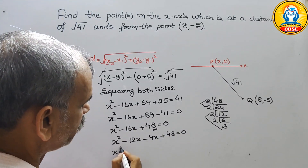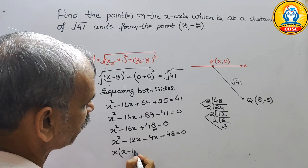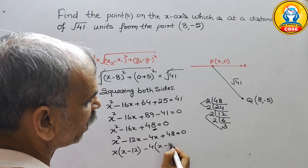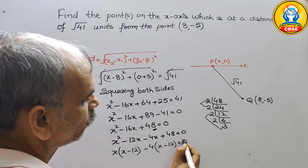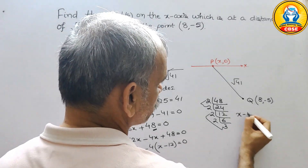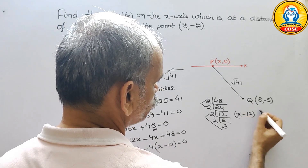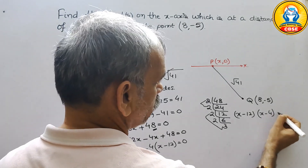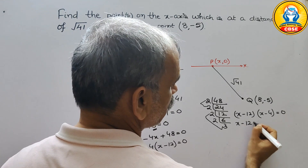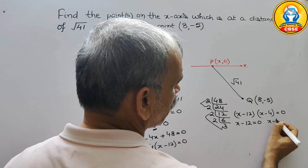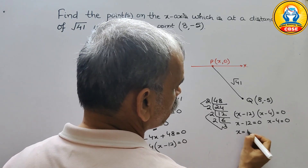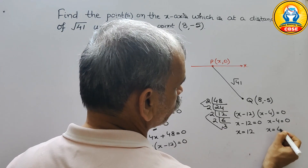तो यहाँ पर हो गया X square minus 12X minus 4X plus 48 is equal to 0। X is common यहाँ पर: X(X minus 12), यहाँ पर minus 4 is common: minus 4(X minus 12)। तो आपके दो factors: (X minus 12)(X minus 4) is equal to 0। So X minus 12 = 0 और X minus 4 = 0, तो X = 12 और X = 4।